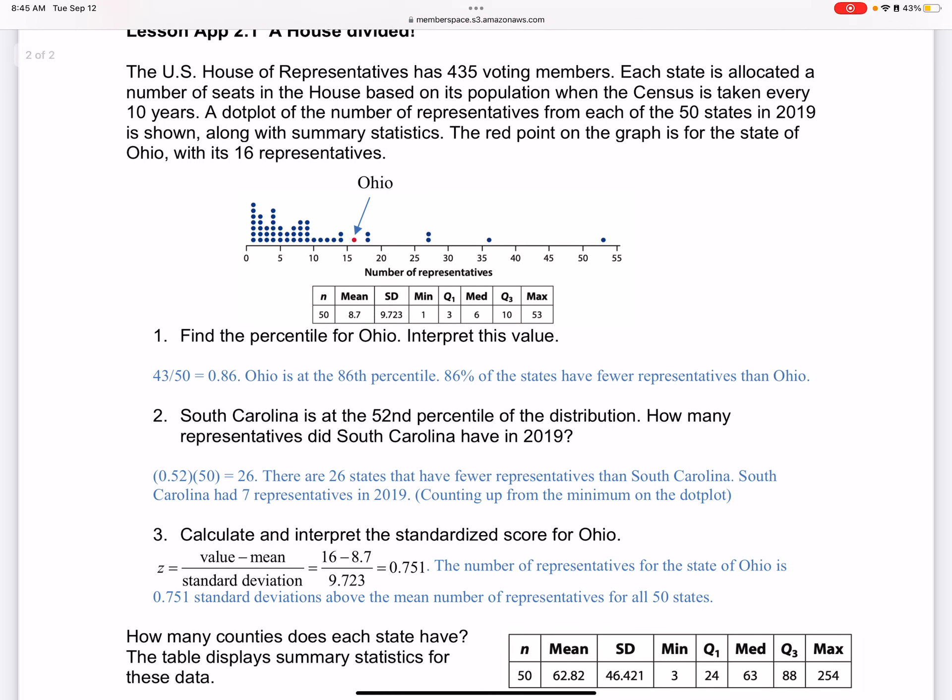South Carolina is the 52nd percentile of the distribution. How many representatives did South Carolina have in 2019? If you multiply 52 percent times 50, you get 26. So there are 26 states that have fewer representatives than South Carolina. South Carolina has seven representatives in 2019, and you can count up from the minimum.